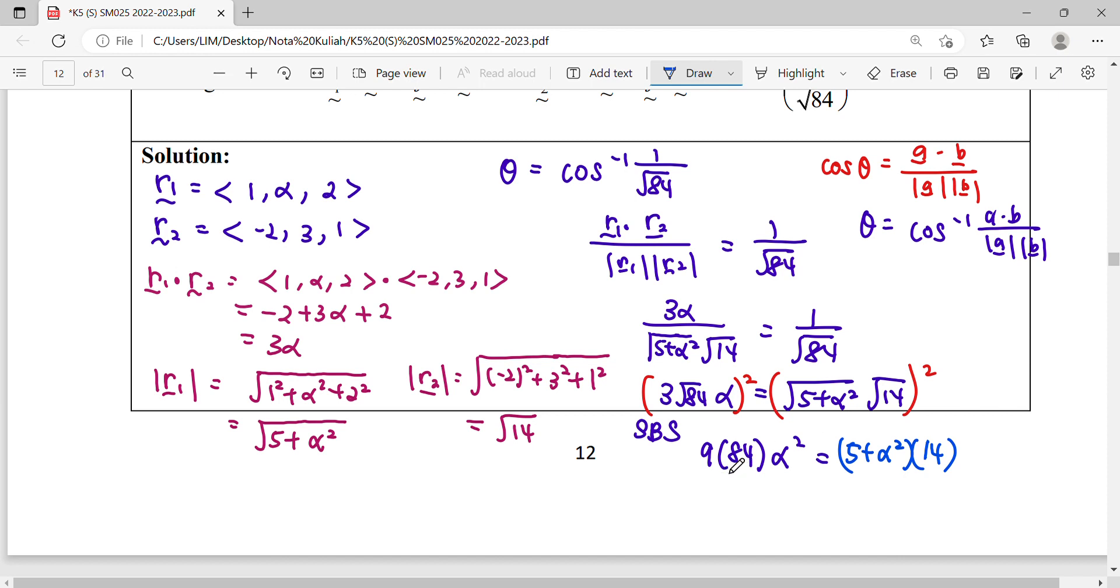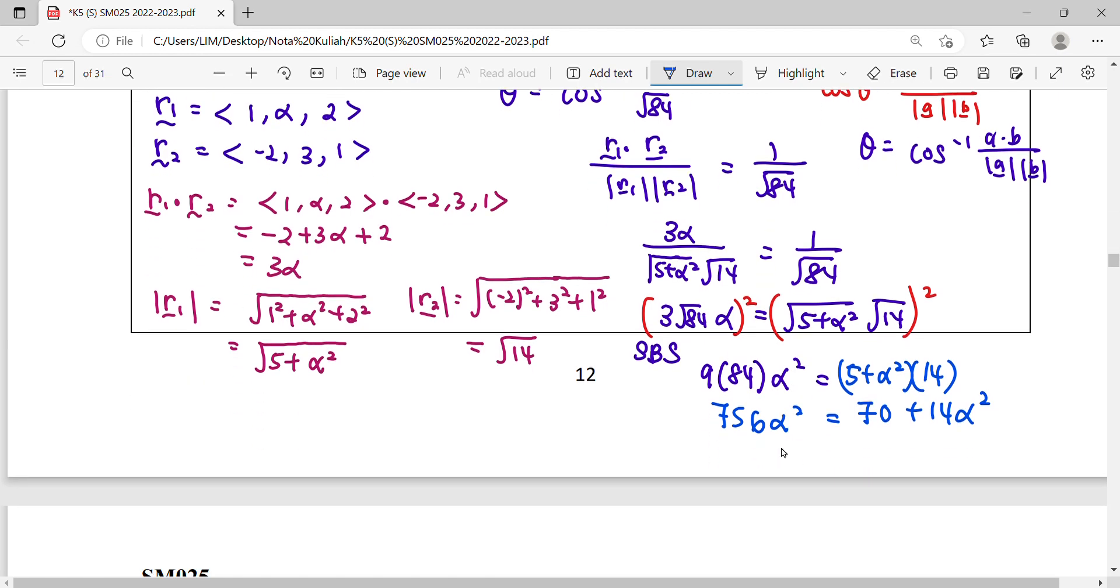9 times 84. So this one expand. And then we collect back our alpha term, minus 40.